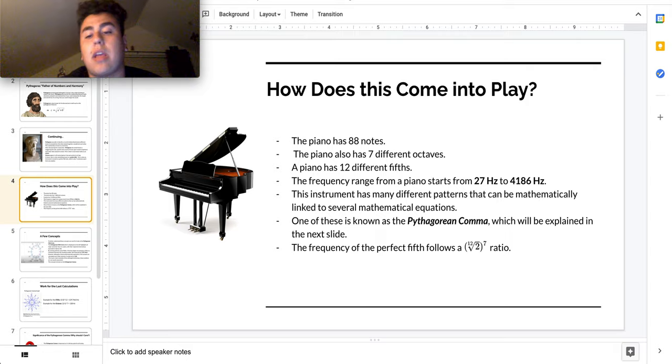One of these is known as the Pythagorean comma, which will be explained in the next slide. The frequency of the perfect fifth follows a 2 to the 12th root to the 7th power ratio.